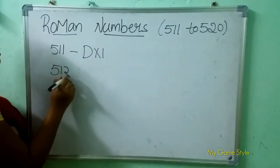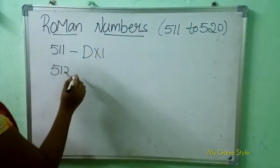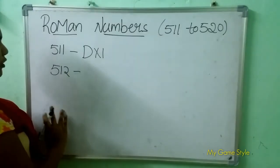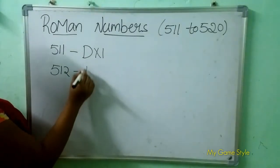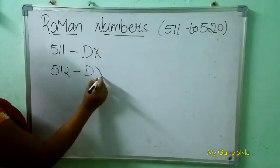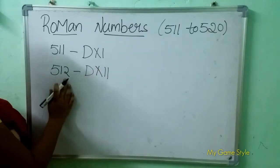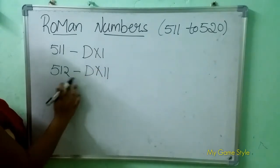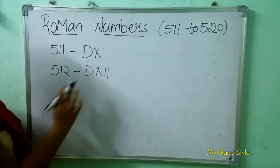512 means 512. So how to write Roman number 512? D is 500. XII is 12. So this means 512.